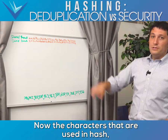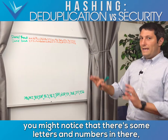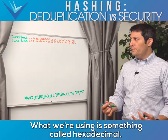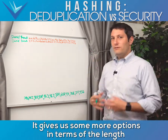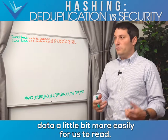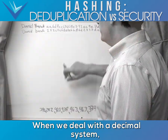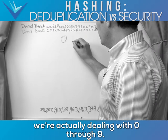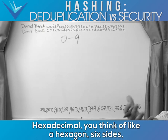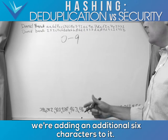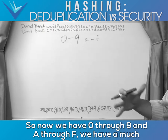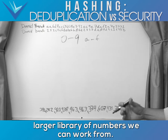The characters used in a hash include some letters and numbers — but not all letters of the alphabet. What we're using is called hexadecimal. With a decimal system we deal with zero through nine. Hexadecimal — think of a hexagon with six sides — adds an additional six characters: A through F. So now we have zero through nine and A through F, giving us a much larger library of values to work from, which is why these numbers can be so much more unique.